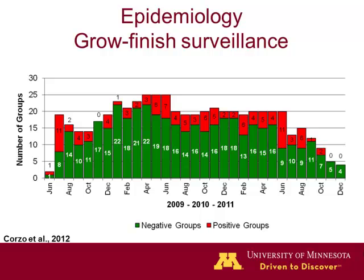We see a distribution throughout the year, and basically we could find influenza every single month when we were looking for it. Many groups were negative, illustrated in green, but many were still positive. Influenza is just not a seasonal infection that we only see in the fall or spring. If we look for the viruses, they are there year-round, even if we don't see clinical signs.